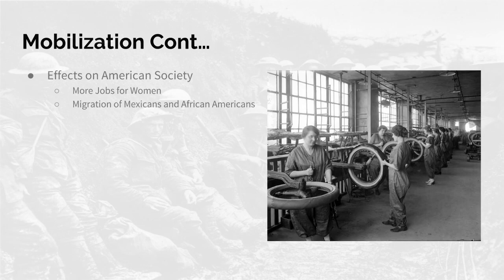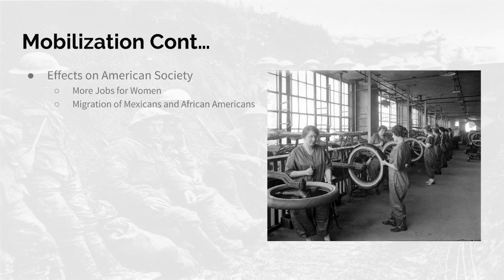Mobilization continued — effects on American society. There were more jobs for women, and their work ethic helped the war dramatically and convinced Wilson to eventually support the 19th Amendment. Migration of Mexicans and African Americans increased: many Mexicans came to the U.S. for work in mainly mining and agriculture, and African Americans' involvement in the industry workforce also increased, going heavily into the factories to work.